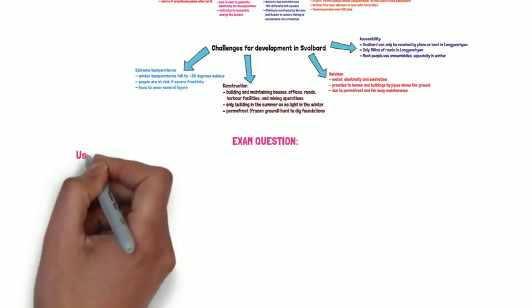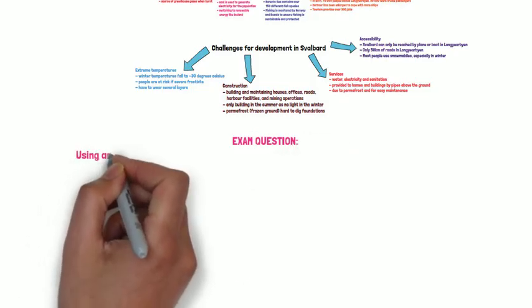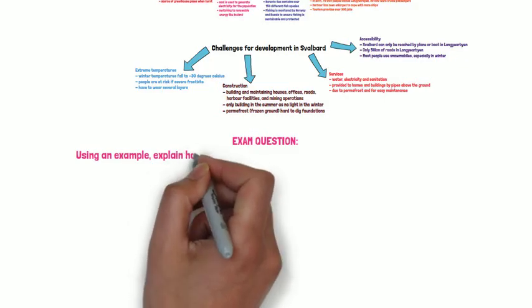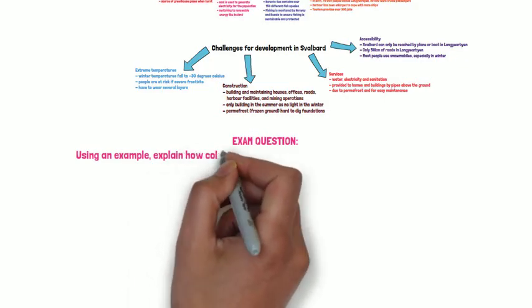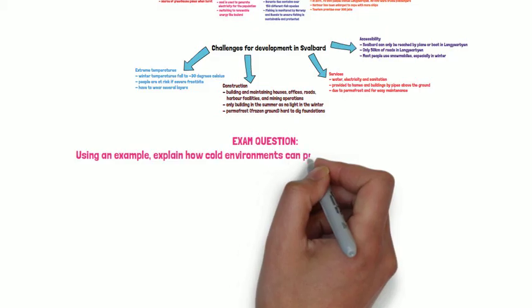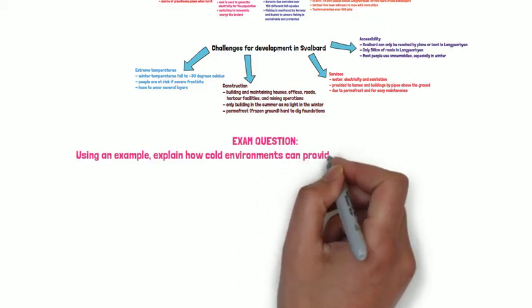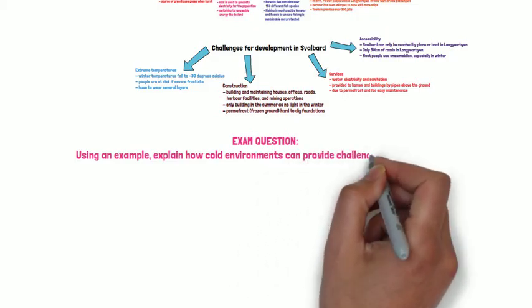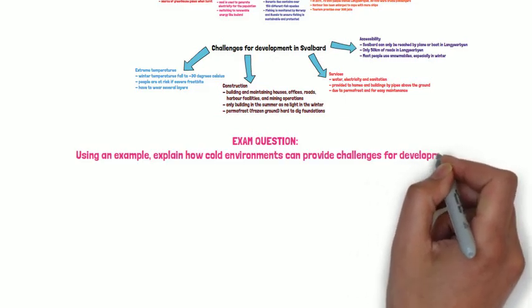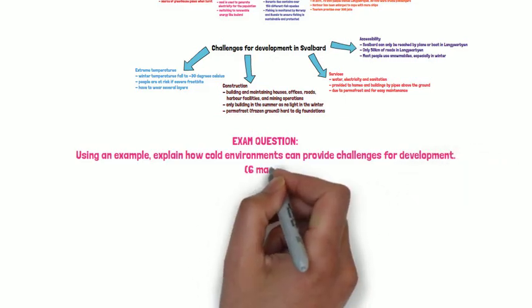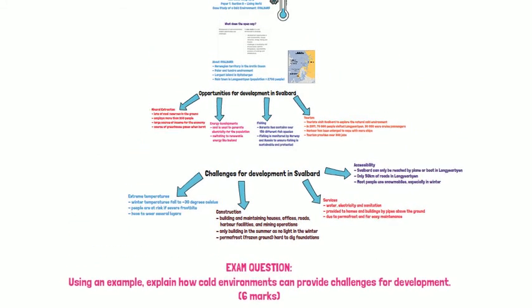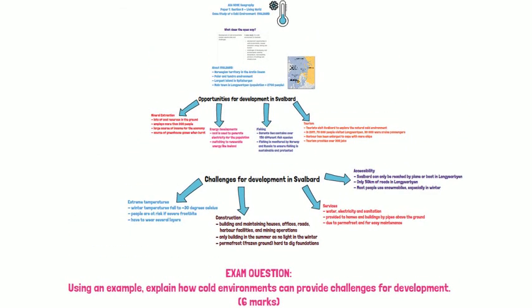Next we have an exam question on Svalbard: using Svalbard as an example, explain how cold environments can provide challenges for development. This is a six-mark question and is worthwhile planning or having a go at.